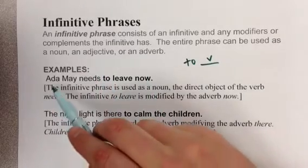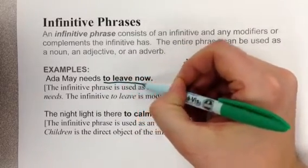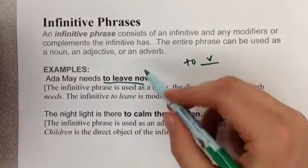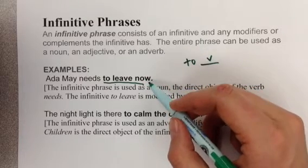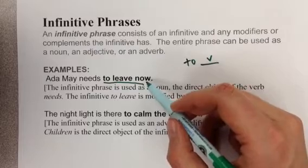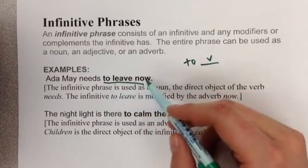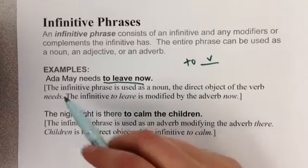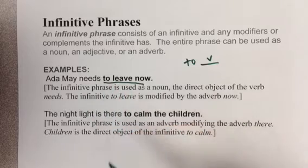So here's some examples. Ada May needs to leave. And then we have a word that modifies to leave. It's the adverb now. It tells us when she has to leave. That's one of the functions of an adverb. It tells us when something should be done. So here we have the infinitive phrase. The adverb modifies that infinitive. And this, the whole thing, is used as a noun. It's the thing that Ada May needs.